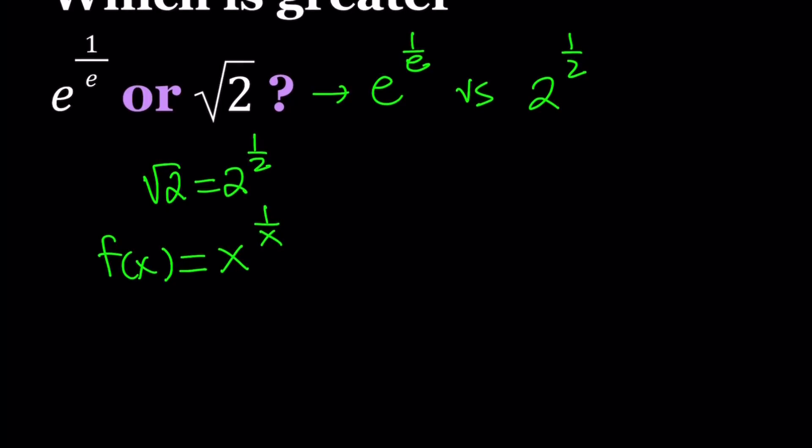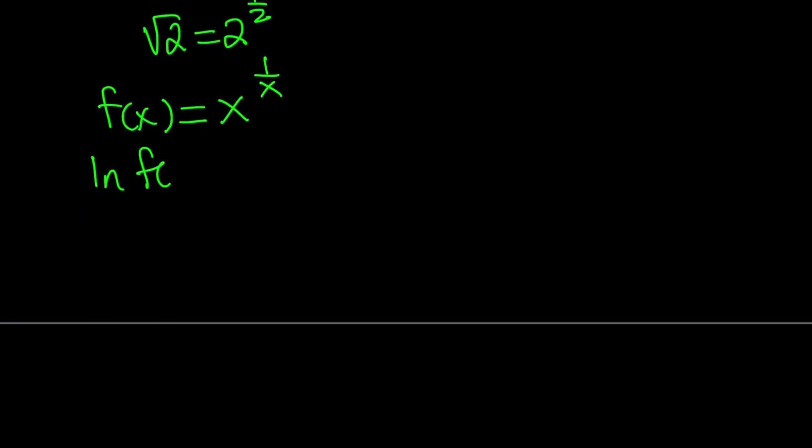So I want to differentiate this function. And I know some folks are going to write this using ln, like e to the power ln something. But I would like to ln both sides first. So let's go ahead and ln both sides. That's going to give me ln f of x equals ln x to the power 1 over x.